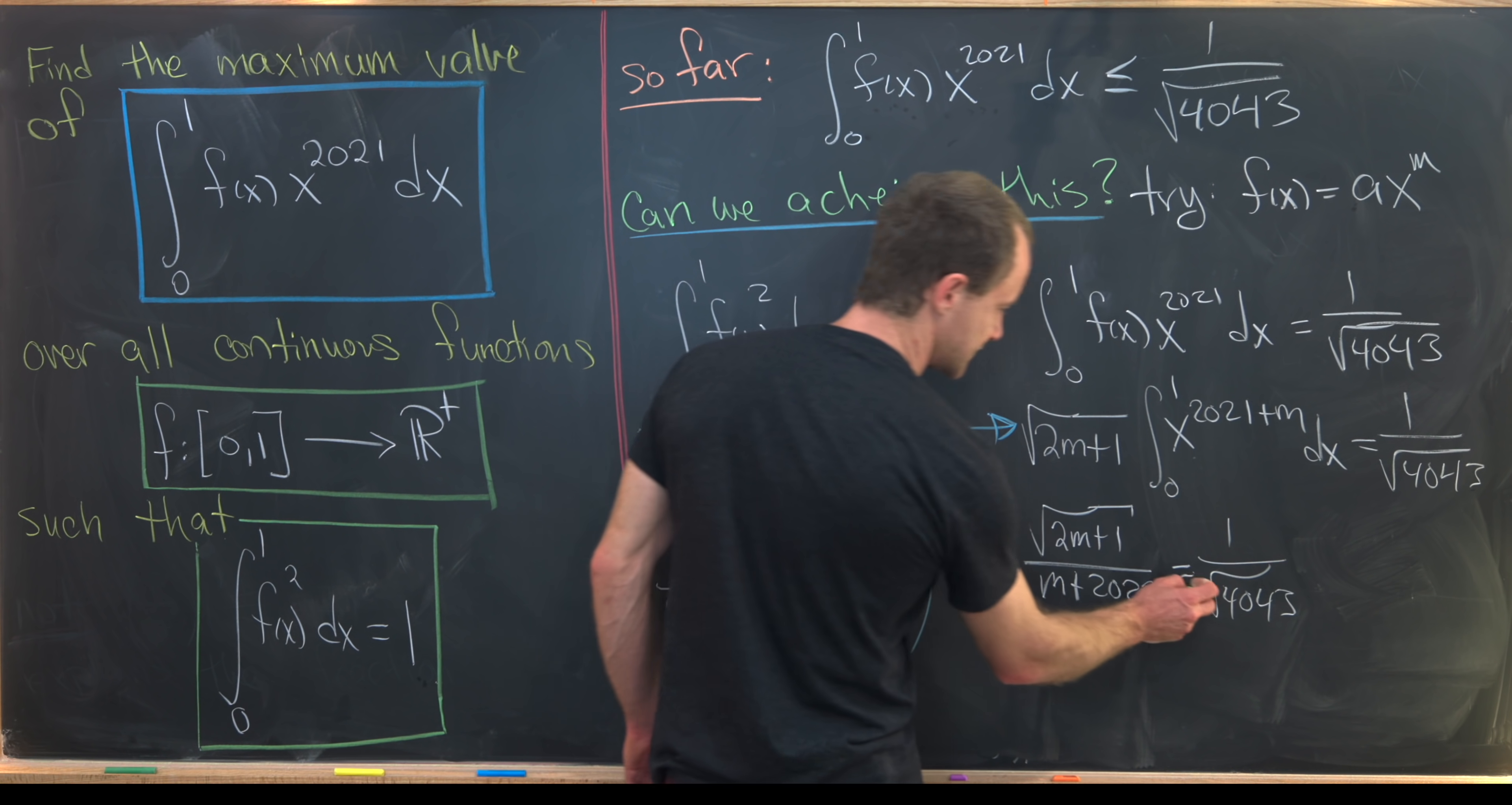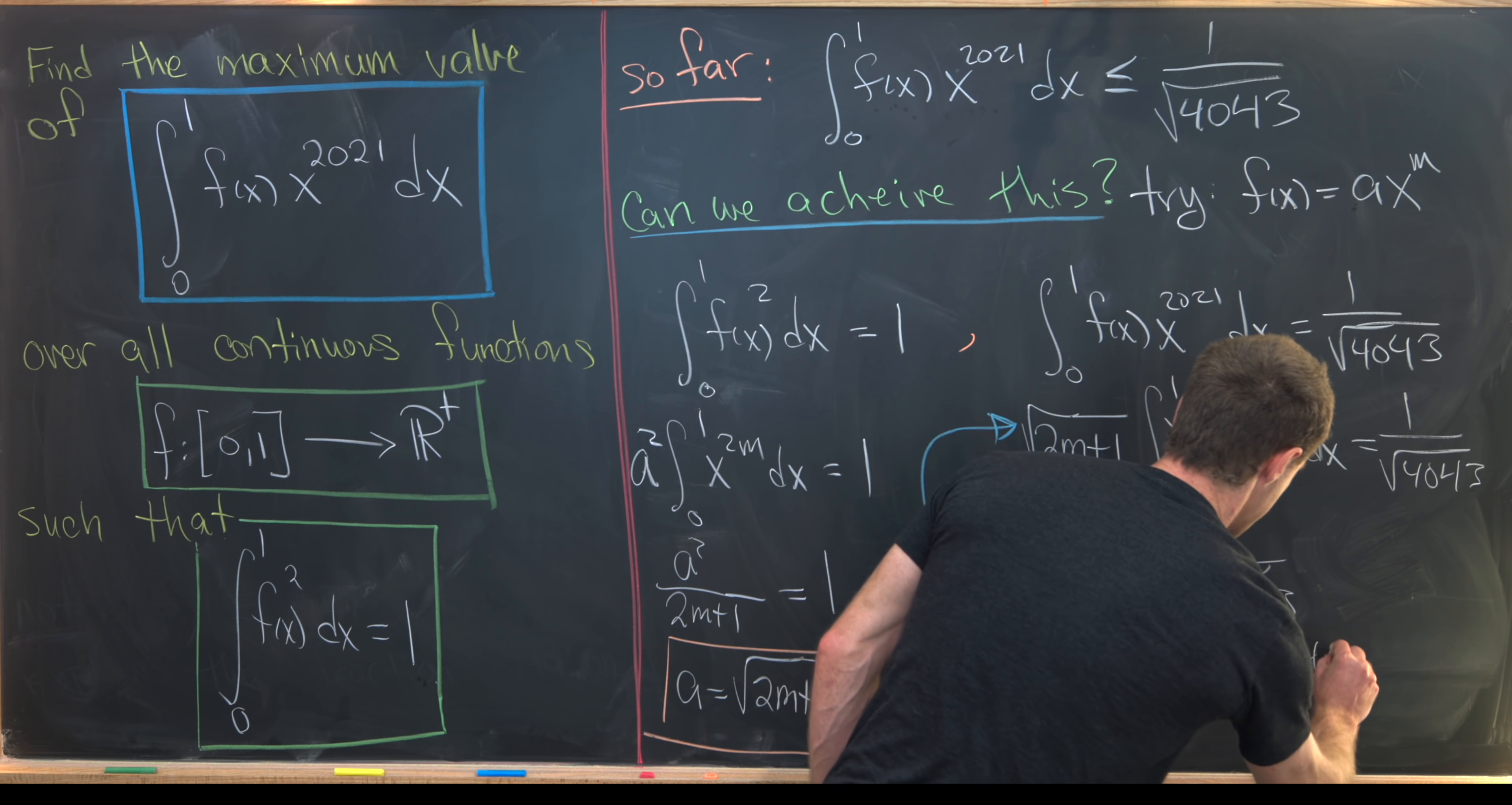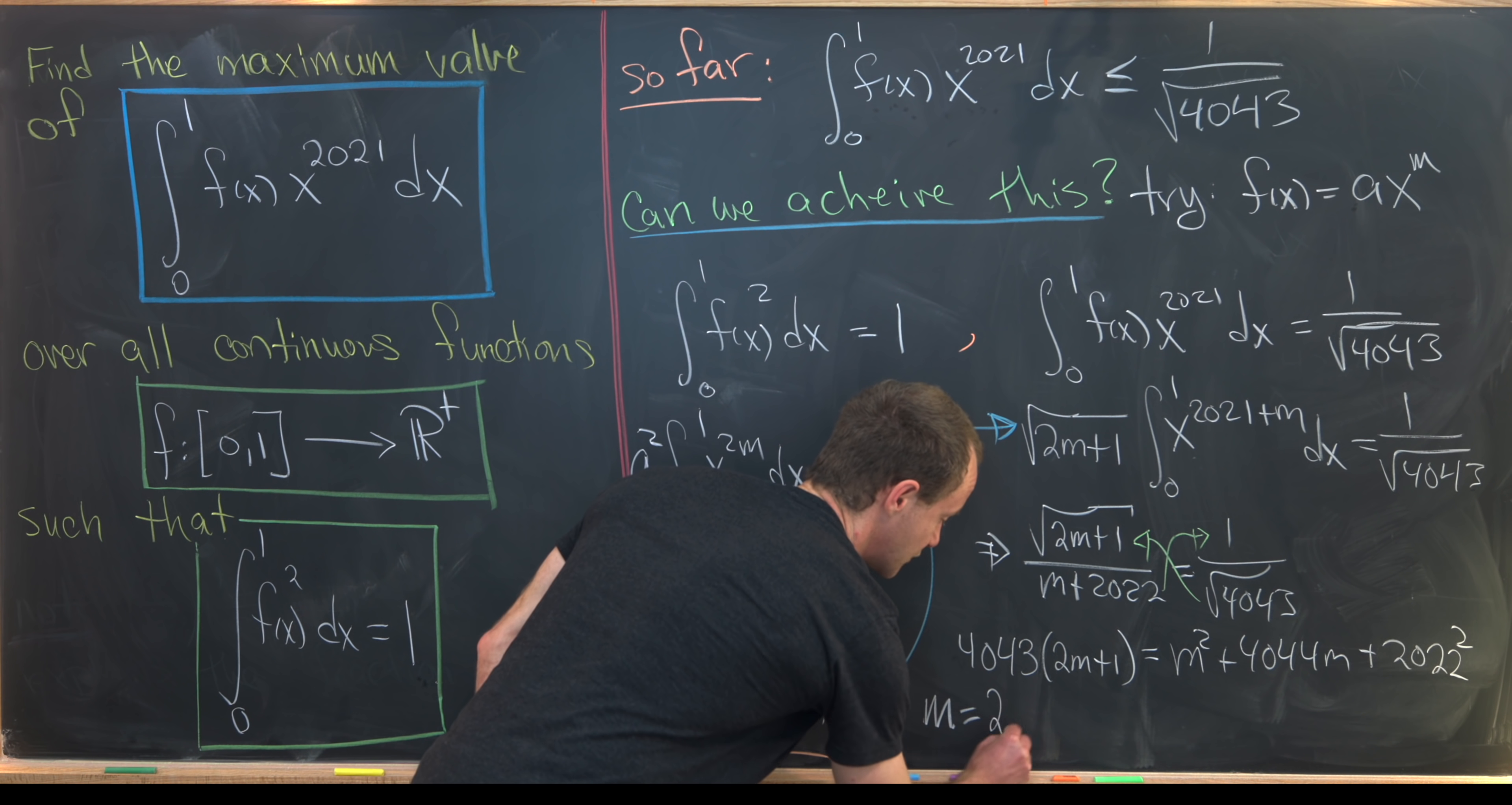So next, let's cross multiply so we no longer have any fractions, and let's simultaneously square so we have no square roots. So that's going to give us 4043 times 2m plus 1 equals m squared plus 4044m plus 2022 squared. Now we've just got a quadratic polynomial, and it's pretty easy to solve quadratic polynomials like this even though our constants are quite large. I'll let you guys work out the details solving this equation. I will say that you get m equals 2021.